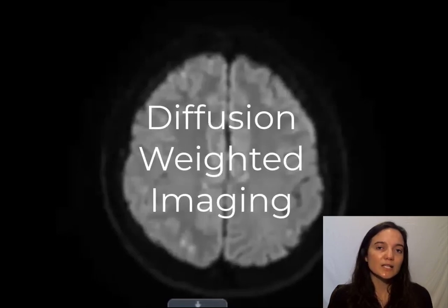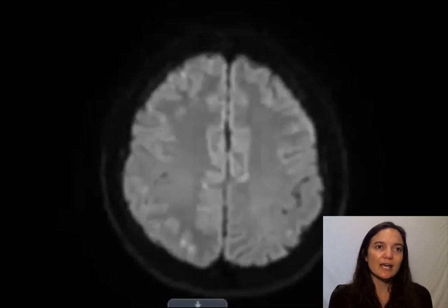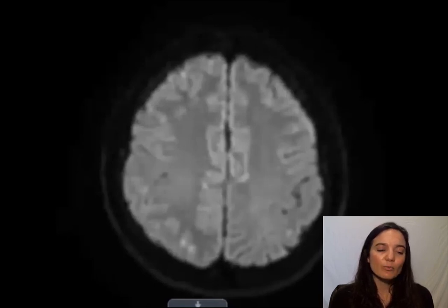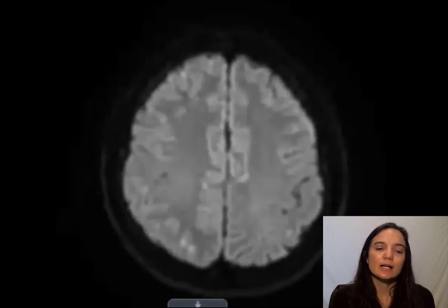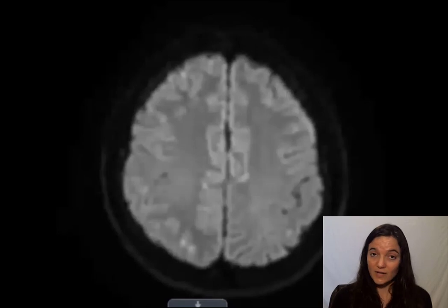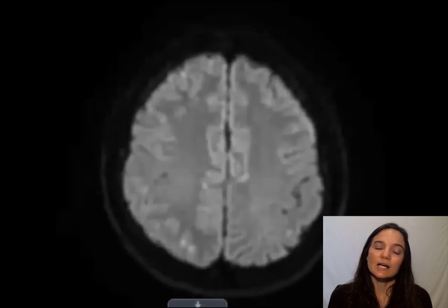This is the DWI. DWI highlights areas of the brain that have a very high hypercellular density. Things that are bright on the DWI tend to be lesions that are very cellular — this could be infection, dense inflammation, or certain tumors that are very densely cellular, like medulloblastoma for example.